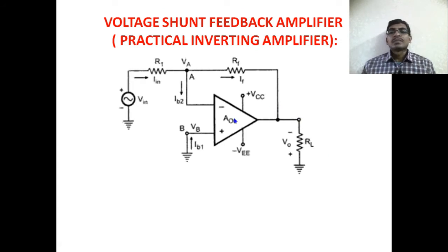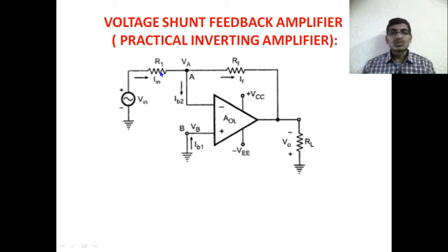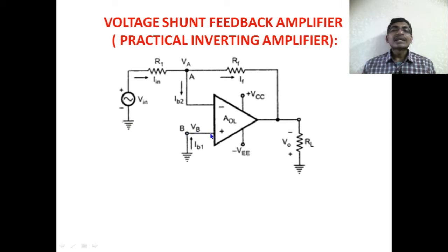Let us see the circuit diagram for the voltage shunt feedback amplifier. This is the operational amplifier symbol. The inverting input and the non-inverting input are shown. The supply voltages are +VCC and -VEE. The non-inverting input has been connected to ground, and the input signal is given to the inverting terminal. VA is the voltage at the inverting terminal and VB is the voltage at the non-inverting terminal.